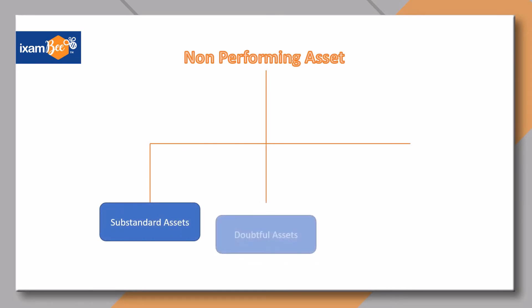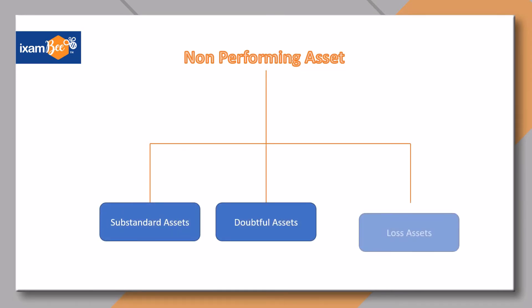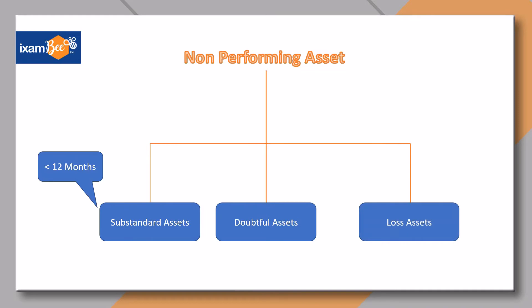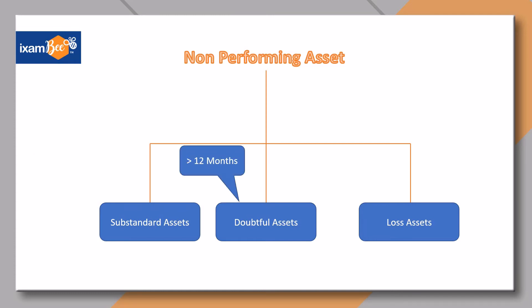Substandard assets are the assets which have remained NPA for a period of less than or equal to 12 months. If the asset is in the substandard category for a period of 12 months, it becomes a doubtful asset.